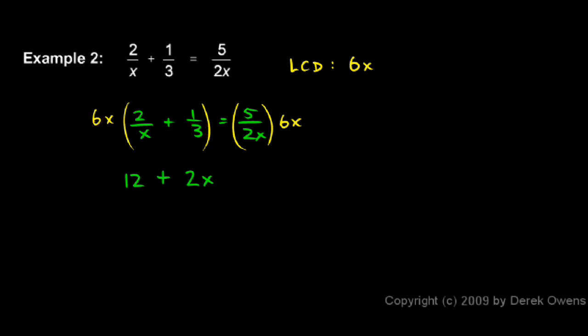So the left side has become 12 plus 2x. Now let's look at the right. Over here, the 6x multiplied by the 5 over 2x. The x up top, remember this is in the numerator, so the x up top cancels with the x down here. And the 6 over 2 becomes a 3, and that 3 multiplied by that 5 will give us a 15.